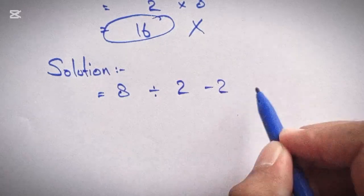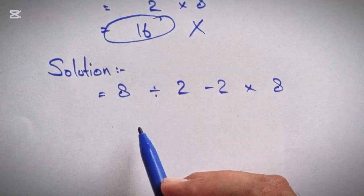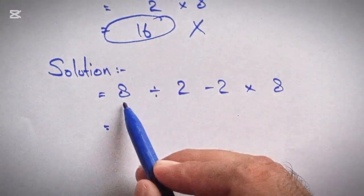Here according to PEMDAS rule, we start from division. 8 divided by 2 equals 4.